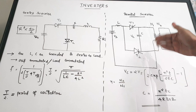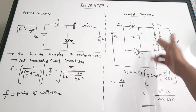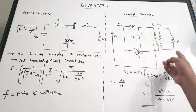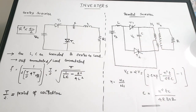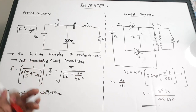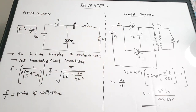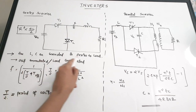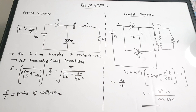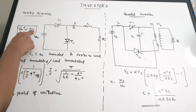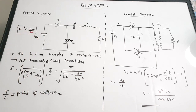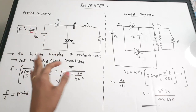You can see there is a transformer connected with the resistance, and the capacitance comes in parallel with the resistance via this transformer. Both circuits use two thyristors T1 and T2. For the series inverter, L and C are connected in series with the load, and the condition is R² < 4L/C for choosing the load resistance.